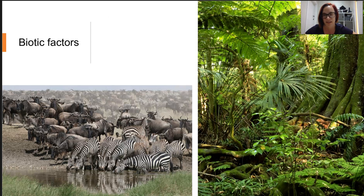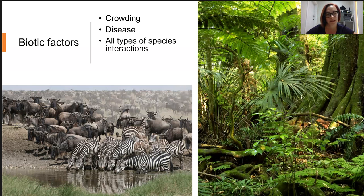Now there's many biotic factors which influence population abundance and distribution. We also really have to consider every type of organism interaction we've talked about already. So the predation, the symbiosis, all of that. We're going to talk more about that when we talk population change and growth.